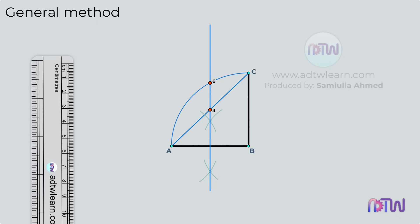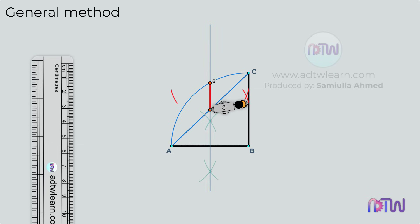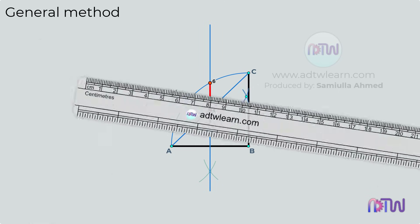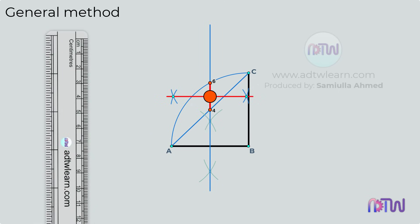After this, we need to divide the length between points 4 and 6 into two halves. To do so, apply the midpoint method. Draw a line passing through these points and label this point as 5.